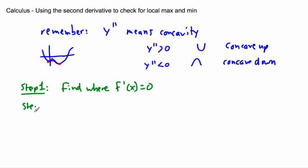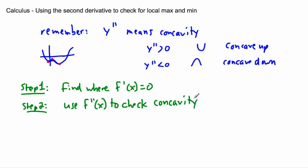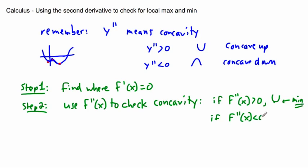Previously in step two we were checking that the first derivative changes sign left to right. But now step two is to use f double-prime of x to check concavity. If f double-prime of x is greater than zero, it opens upward — that means it's a minimum. If f double-prime of x is less than zero, it opens downward — that means it's a maximum. So rather than doing a sign diagram we can just check the second derivative.